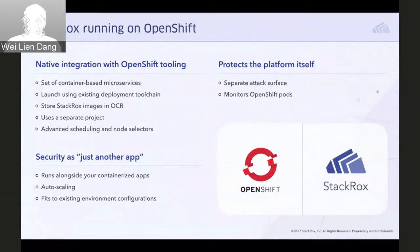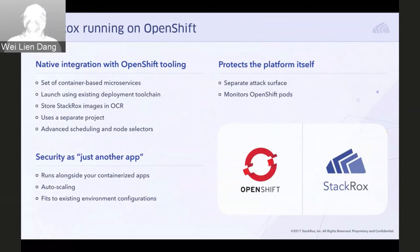Our platform is distributed as a set of container images used to launch StackRox services into your OpenShift cluster. Rather than just providing a set of Docker images, we build in native integrations with the platform itself. This level of integration means that bringing up StackRox in OpenShift is very easy — you can utilize your existing orchestrator toolchain including the OpenShift CLI, familiar OC command syntax, and YAML files to launch and manage StackRox.